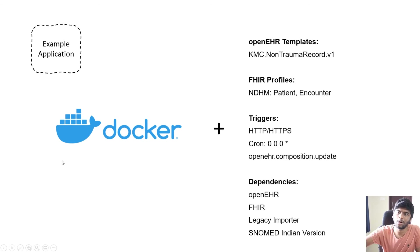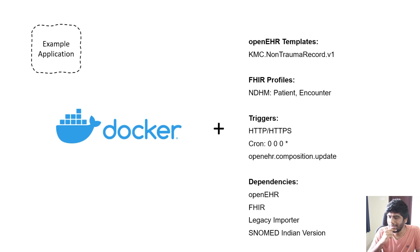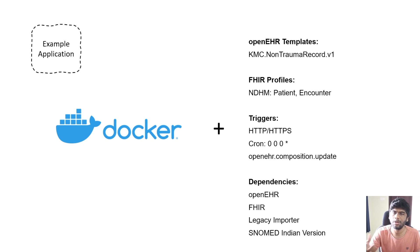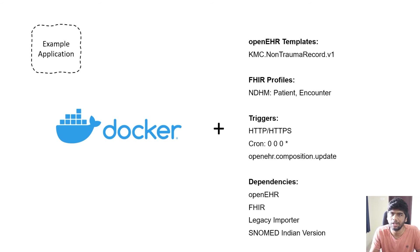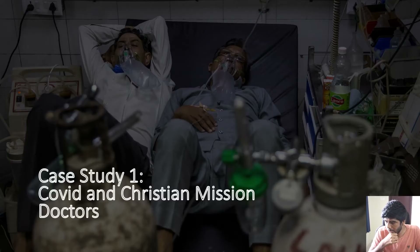An app in the MedBlocks stack is nothing but a Docker container along with some metadata. In the metadata you mention what clinical models you use — which archetypes, templates, and FHIR profiles — and you mention triggers: what should this Docker container respond to. It can be HTTP/HTTPS for a single-page application, a cron job running every day, or an event triggered when a FHIR resource is committed. Docker is a way to package your application uniformly from the OS level up, making sure your app runs exactly the same way wherever you deploy it — local machine, Google Cloud, Azure, or AWS.